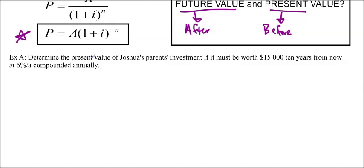So, we're going to use that for this question. Example A, determine the present value of Joshua's parents' investment if it must be worth $15,000 10 years from now at 6% per annum compounded annually. It's compounded annually, which means that we can just let I equal the per annum rate, which is 0.06, N will be the number of years, which is 10, and A is equal to 15,000, because that's how much we want it to be worth in the future.